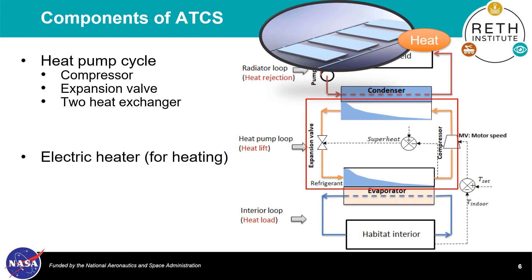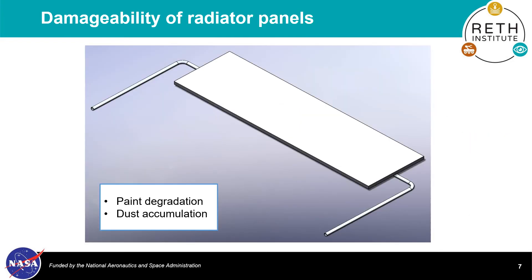For heating, a simple electrical resistance heater is implemented in the code. In order to study performance degradation due to damaged components, two types of damage on a single component radiator panel are considered. The considered types of damage include thermal paint degradation and dust accumulation on the surface of the panels due to external events such as meteorite impact and rocket launch.